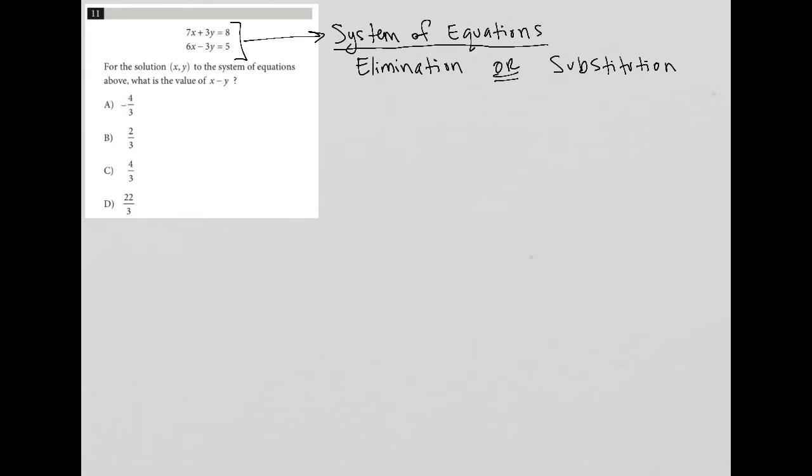It's a very straightforward question in that we have this system here: 7x plus 3y equals 8, and 6x minus 3y equals 5. We're asked to find the (x, y) solution, which basically means we want to solve for x and solve for y. I'm going to use the elimination method because, as you can see here, 3y is positive for the first equation and negative for the second equation.